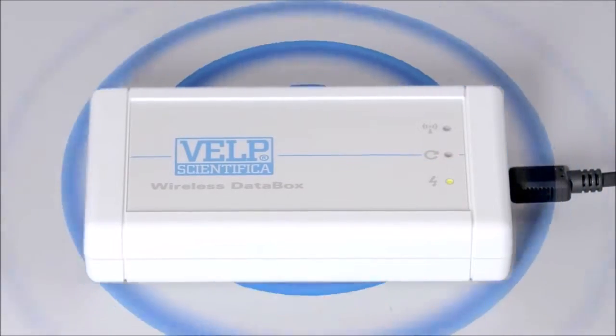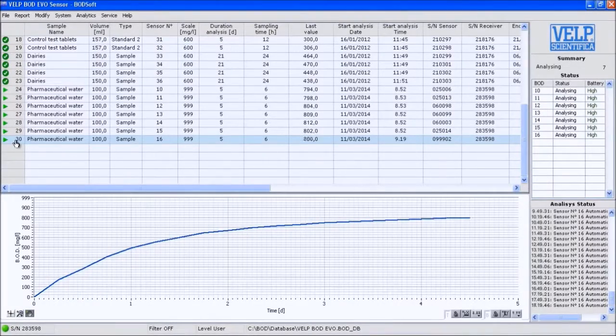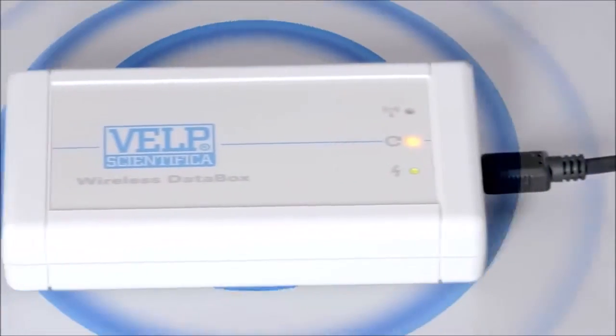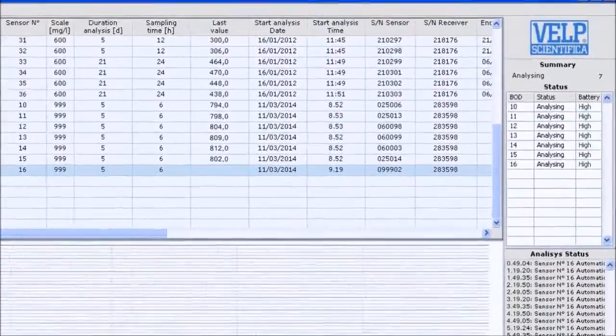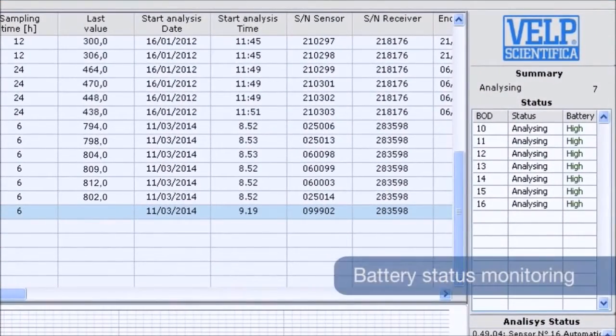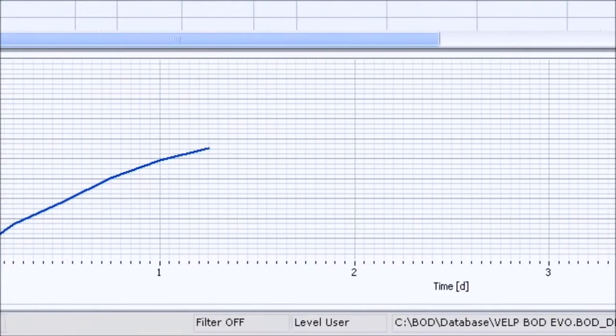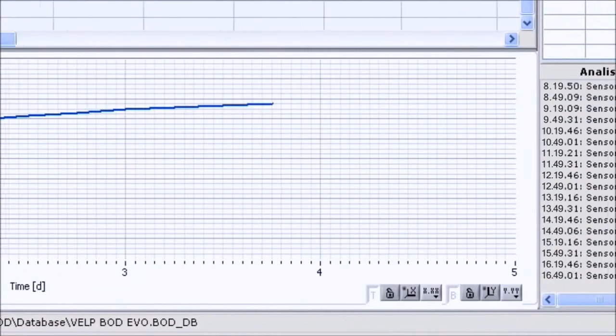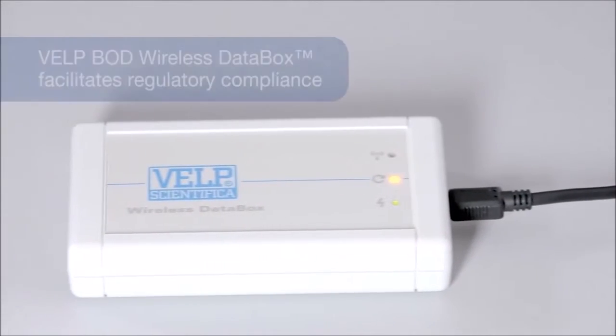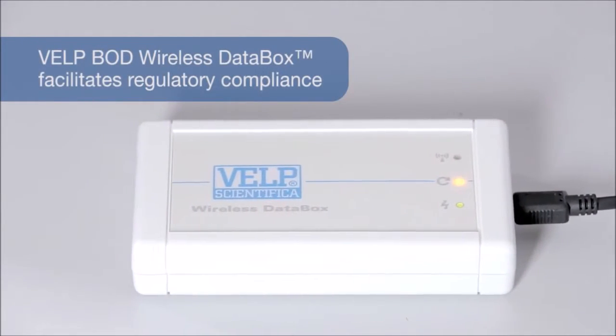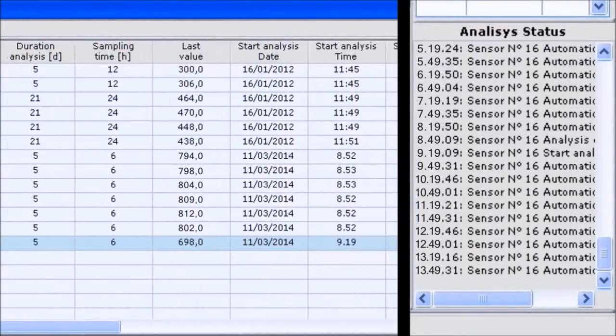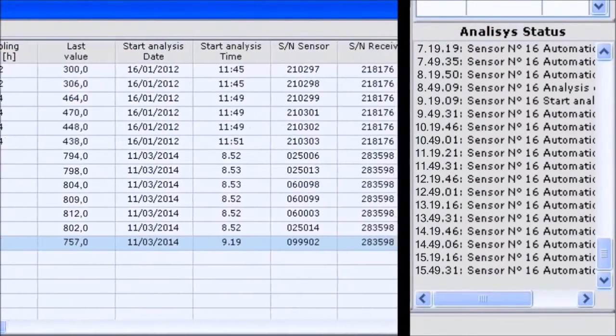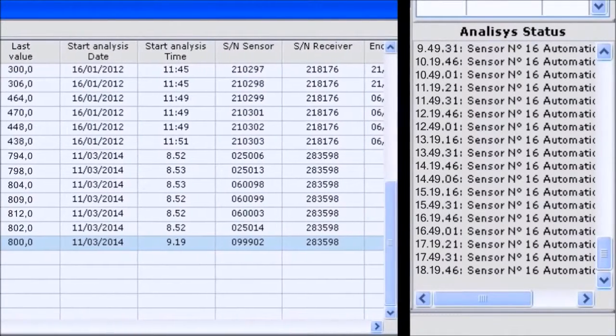Forget about the analysis. The results will be sent automatically to the wireless data box. All the most important info are constantly shown, including the status of the sensor's batteries and a database with automatic real-time graph creation. The exclusive wireless data box facilitates regulatory compliance, continuously monitoring and reporting parameters shown through BOD Soft when connected to a PC.